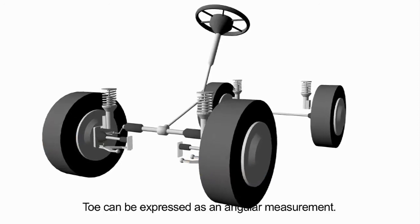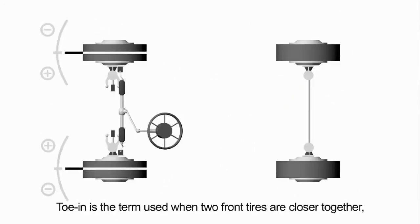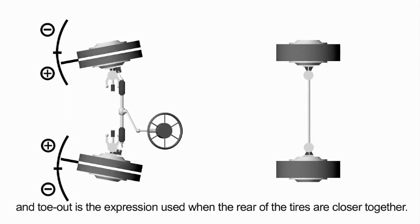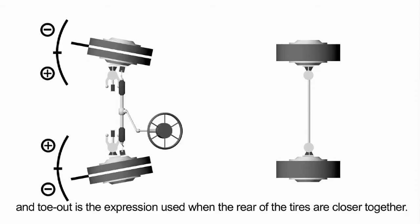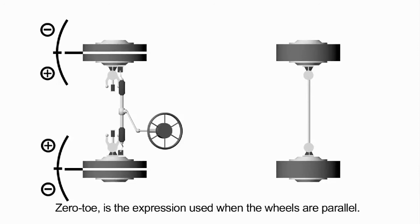Toe can be expressed as an angular measurement. Toe in is the term used when the leading edge of the two front tires is closer together. Toe out is the expression used when the trailing edge of the two front tires are closer together. Zero toe is the expression used when the wheels are parallel.